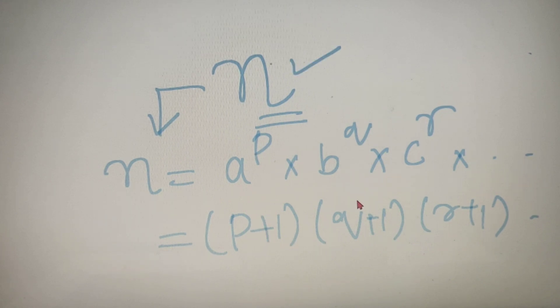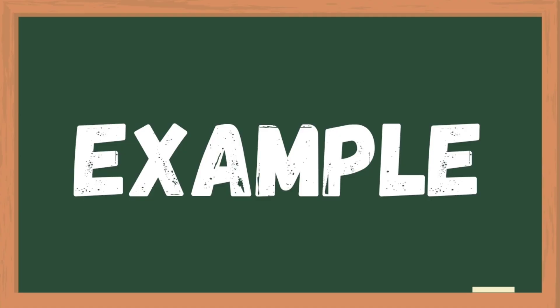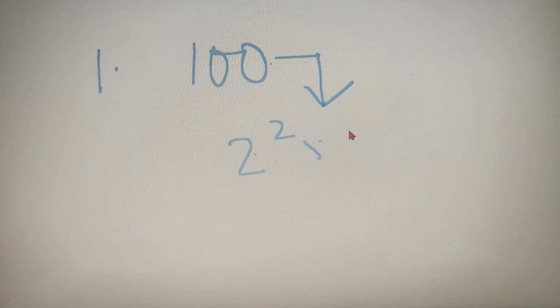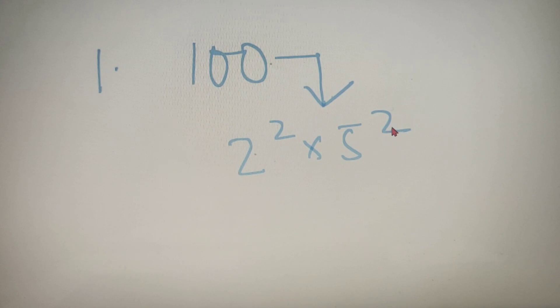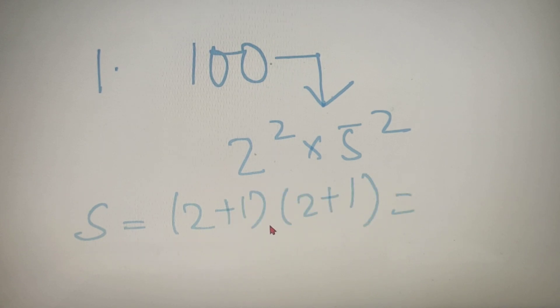Now let's solve a few examples so you will get a better idea on this topic. For our first example, we have to find out the number of factors of 100. First we prime factorize: 100 equals 2 squared into 5 squared. So here, p equals 2 and q equals 2. The number of factors is equal to (2+1) into (2+1), which is 3 squared, which gives us 9. So the number of factors of 100 is equal to 9.